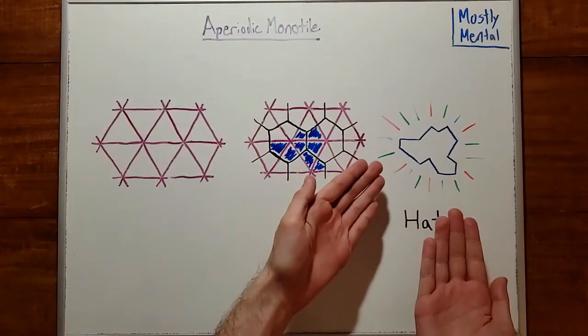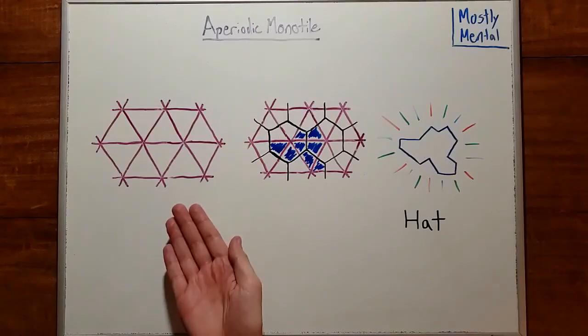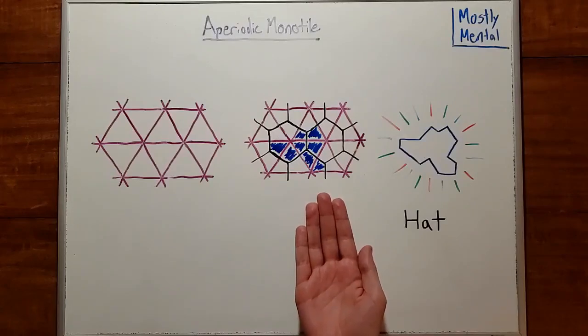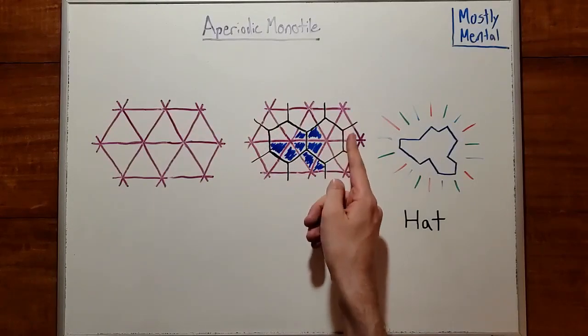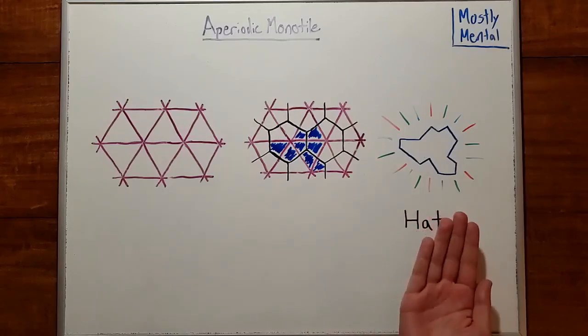Meet the hat. The construction is remarkably simple. Start with a triangular grid, then connect the centers of the triangles to get a grid of these kite shapes, and then stick eight of them together like so, and you've got a hat.